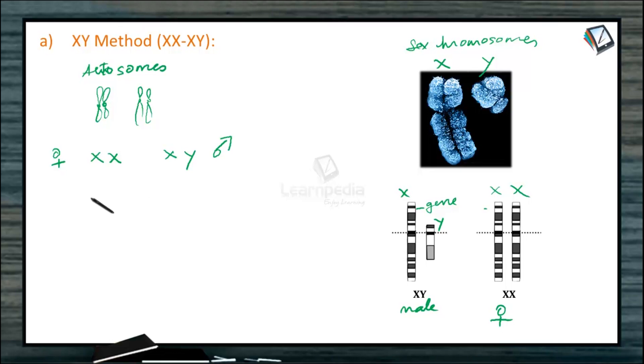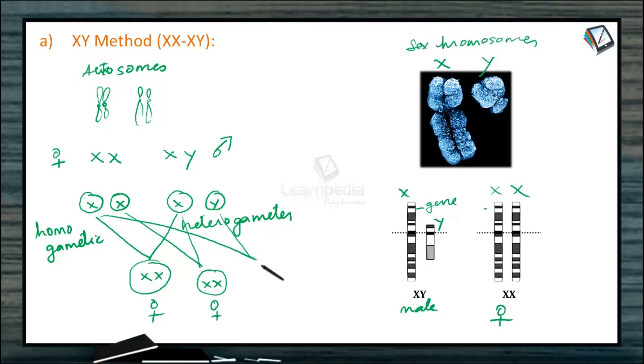Now when they produce gametes, the female will produce homogametic gametes and the male will produce X and another one having Y. So this is called as heterogametic. Suppose this individual of the X cell fuses with this one, then the resulting embryo will be a female. Suppose this individual fuses with this one, the resulting individual again will be a female. Suppose this individual fuses with this one, this one will be a male. And this individual fusing with this one will be again a male. So there are 50-50% chances of the zygote or the embryo to be a male or the female.